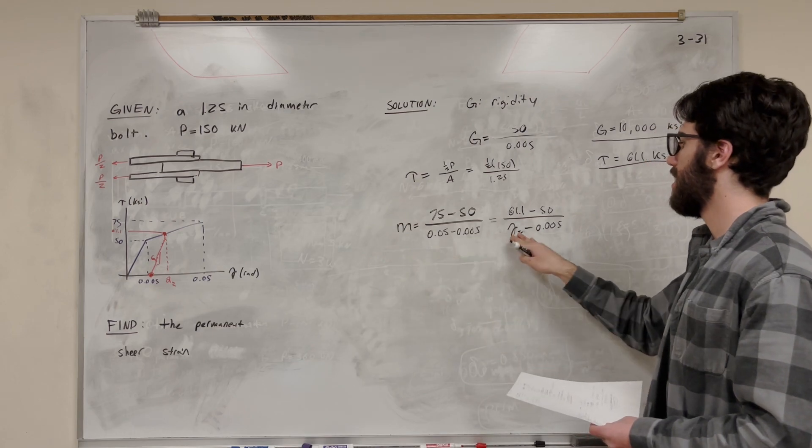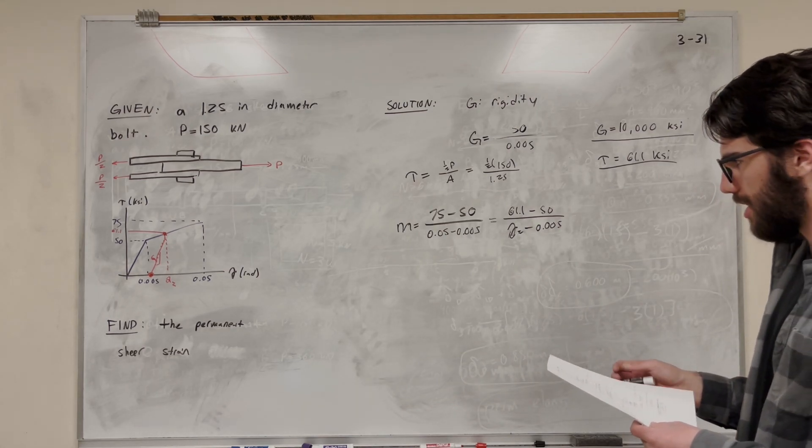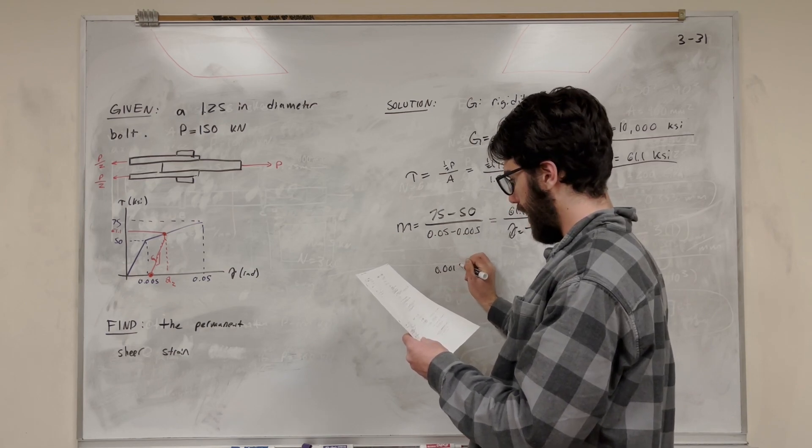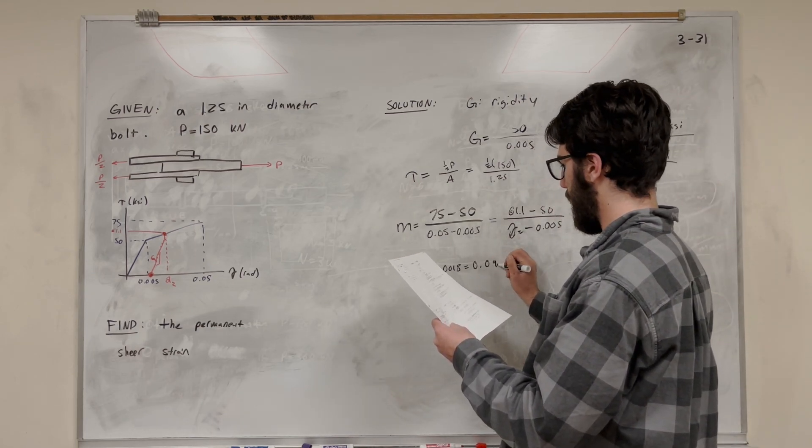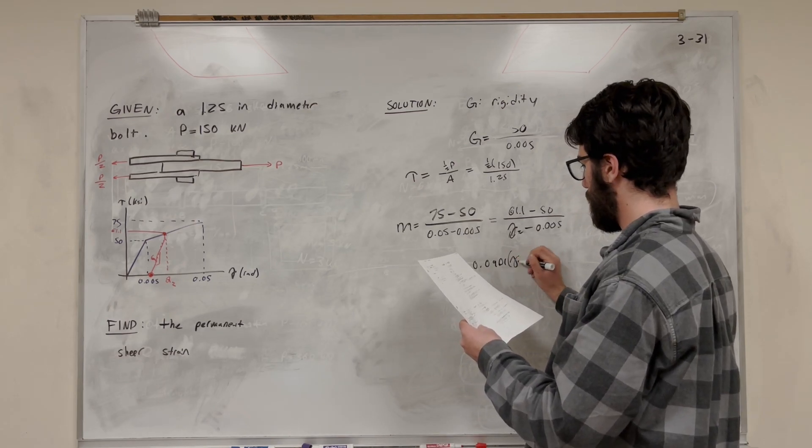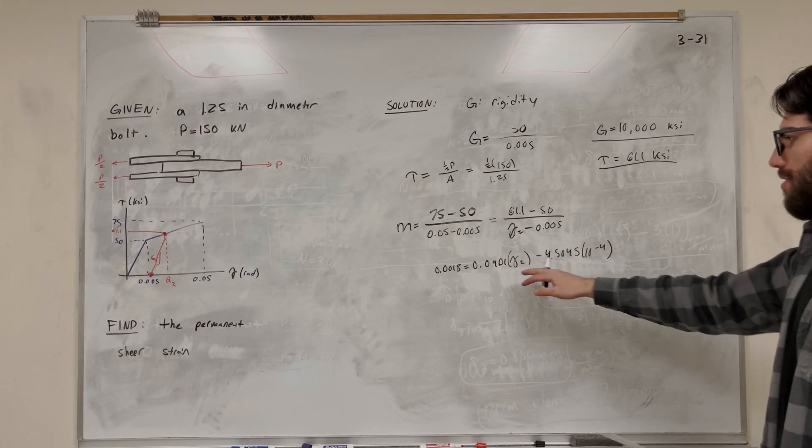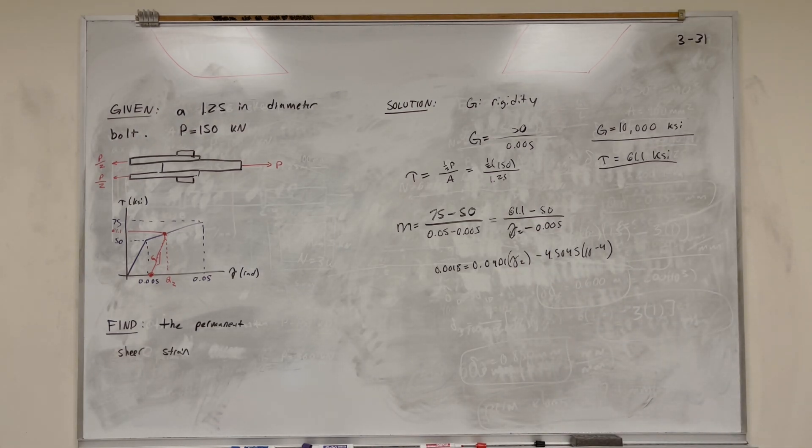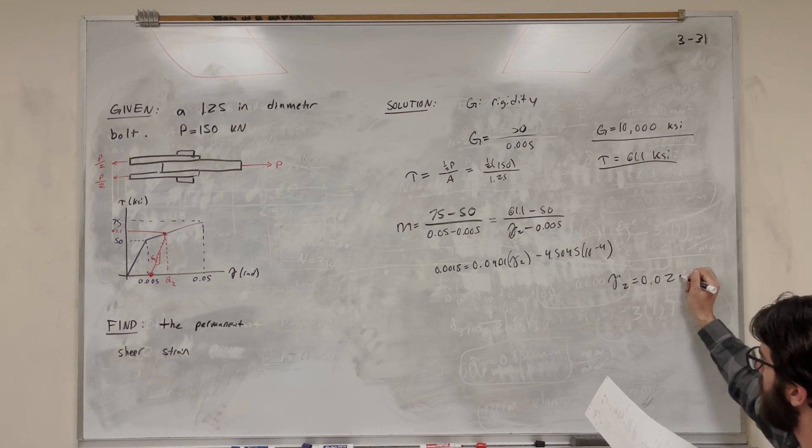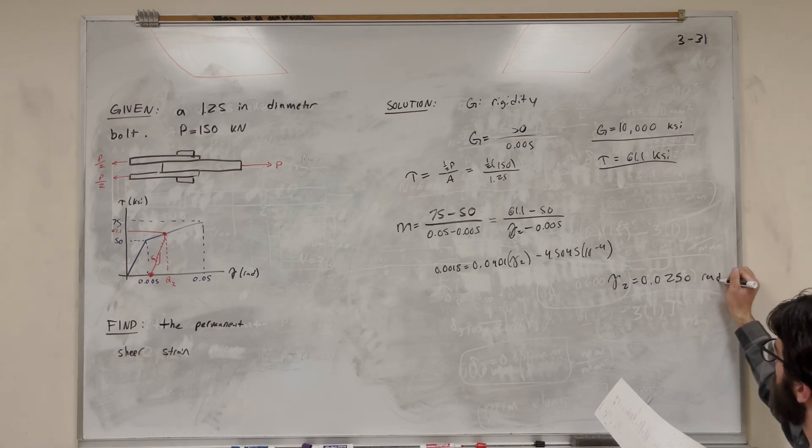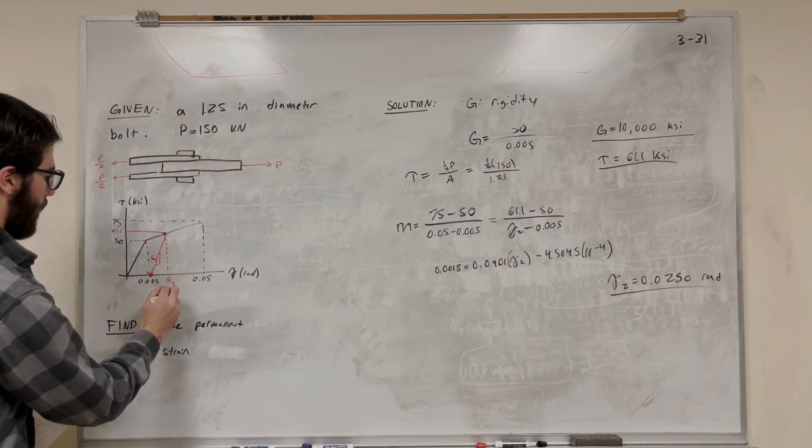And if we just ignore that, then we know we can just solve for this one unknown. So I'm going to skip the steps on this. Actually, no, I'm going to write it down. This is going to be 0.0018 is equal to... So I'm taking the inverse of this to get the gamma on the top. 0.0901 gamma 2 minus 4.5045 times 10 to the negative 4. So you're left with this equation that you can really easily solve for that shear strain. So if you do this, you get that the shear strain at 2 is equal to 0.0250 radians. So that's another answer yet.